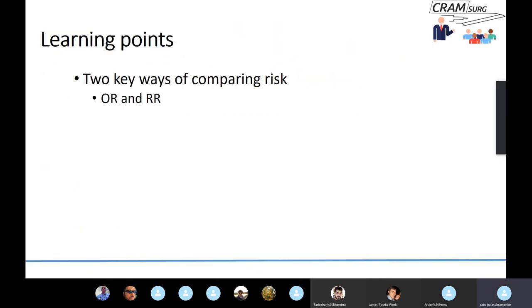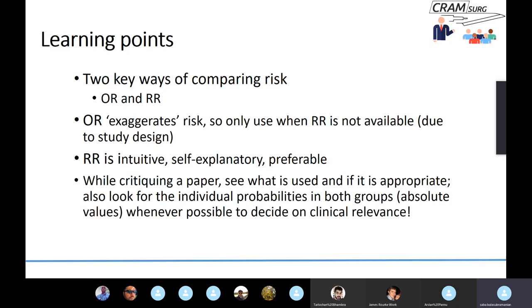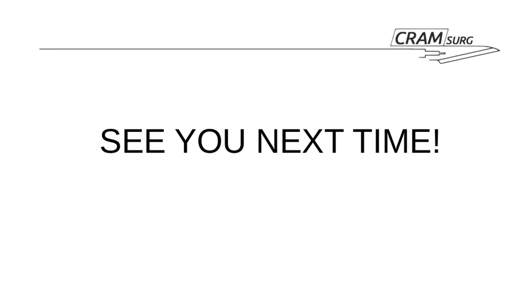The key learning points: we have discussed two ways of comparing risk — odds ratio and relative risk. Odds ratio almost always exaggerates risk, so only use it when relative risk is not available due to study design constraints. Relative risk is intuitive, self-explanatory, and preferable. When critiquing a paper, look at what measure of risk is being used and whether it is appropriate. Look for the individual probabilities — the absolute numbers — in both groups, and assess whether the risk difference is clinically relevant. Thank you everyone for tuning in. Until next time, keep running your life with our surgical podcast.